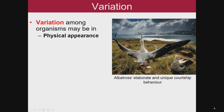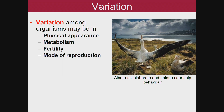Variation among organisms may be in physical appearance, metabolism (all the chemical reactions that happen in their body), fertility, how often they mate, how many offspring they have, mode of reproduction (sexual or asexual), and behavior. Examples of behavioral variation include a courtship dance, flying south for the winter, or gathering together in herds for warmth or protection.